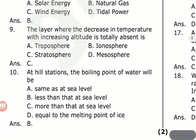The layer where the decrease in temperature with increasing altitude is totally absent — the options are troposphere, ionosphere, stratosphere, and mesosphere. The answer is stratosphere. In the troposphere, as we go higher the temperature decreases. But in the stratosphere, the opposite occurs — as altitude increases, temperature increases.